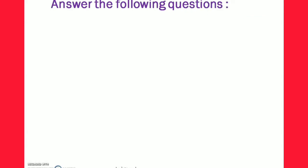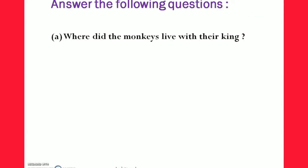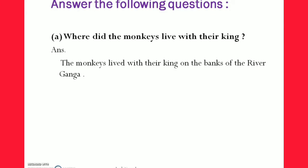Answer the following questions. First question: Where did the monkeys live with their king? Answer: The monkeys lived with their king on the banks of the river Ganga. मतलब बंदर अपने राजा के साथ गंगा नदी के किनारे रहते थे।